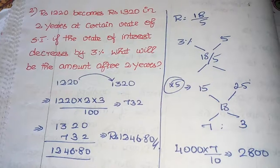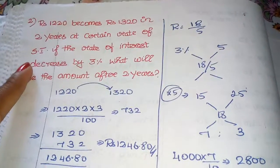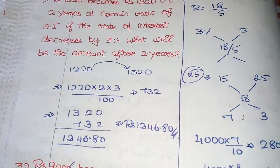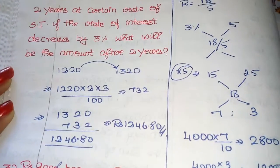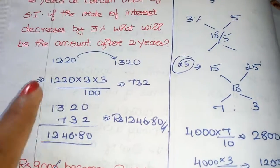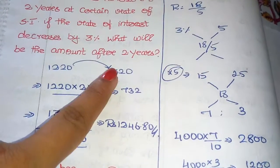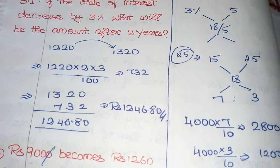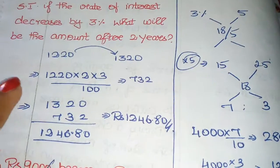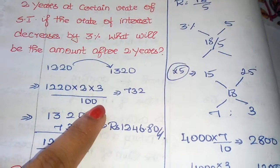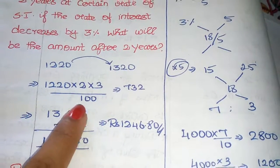Next question: ₹1,220 becomes ₹1,320 in two years at a certain rate of simple interest. If the rate of interest decreases by 3 percentage, what will be the amount after two years? So ₹1,220 becomes ₹1,320 in two years. The interest earned is ₹100. Now rate decreases by 3 percentage — using P × 2 × 3 divided by 100.